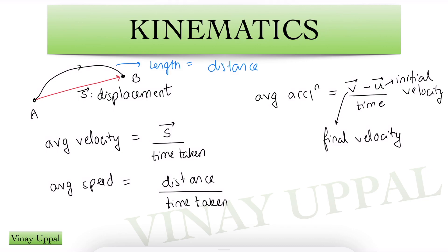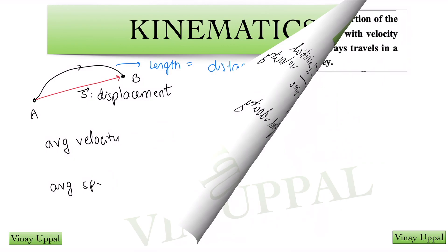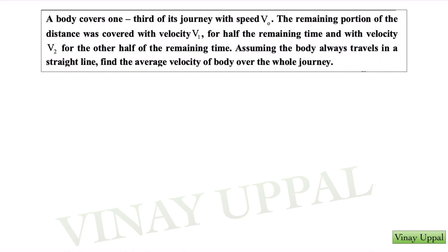Let us do a couple of questions based on these concepts. A body covers one-third of its journey with speed V₀. The remaining portion was covered with velocity V₁ for half of the remaining time and with velocity V₂ for the other half of the remaining time. Assuming the body always travels in a straight line, find the average velocity over the whole journey.